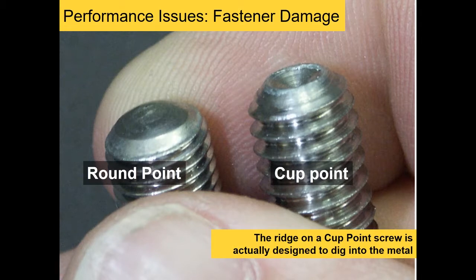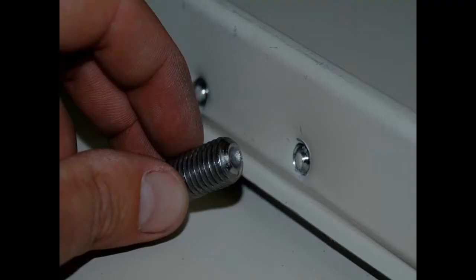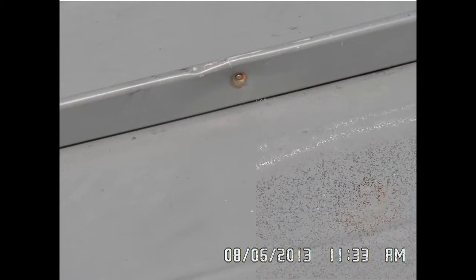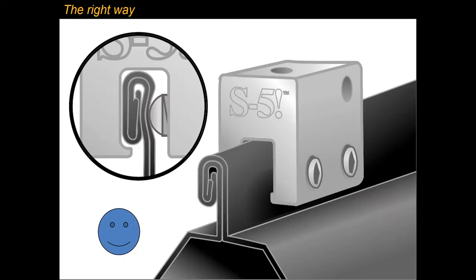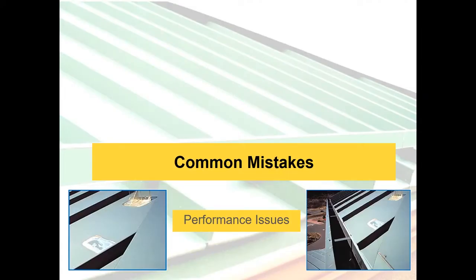Fastener damage: there are some S5 copycats that have come out with set screw products that attach with cup point screws. We've never used a cup point screw and never would. A cup point screw digs in and breaks the metallic coating — that's the corrosion protection. You can see what it does. There's actually a company out there pounding their fists saying this is the right approach. This is about seven years of exposure from a cup point screw, and you can see the corrosion it caused. Use round point set screws.